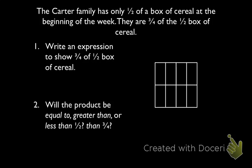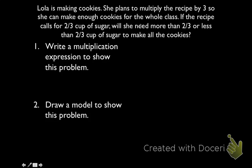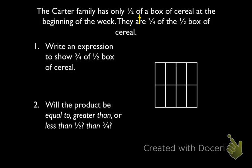Let's look at another problem where we're multiplying a fraction by another fraction. The Carter family has only 1 half of a box of cereal at the beginning of the week. They ate 3 quarters of the 1 half box of cereal. Write an expression to show 3 quarters of 1 half box of cereal — that would be 3 fourths times 1 half. We want to find out: will the product be equal to, greater than, or less than 1 half? Or less than 3 fourths? Let's use a model to understand.